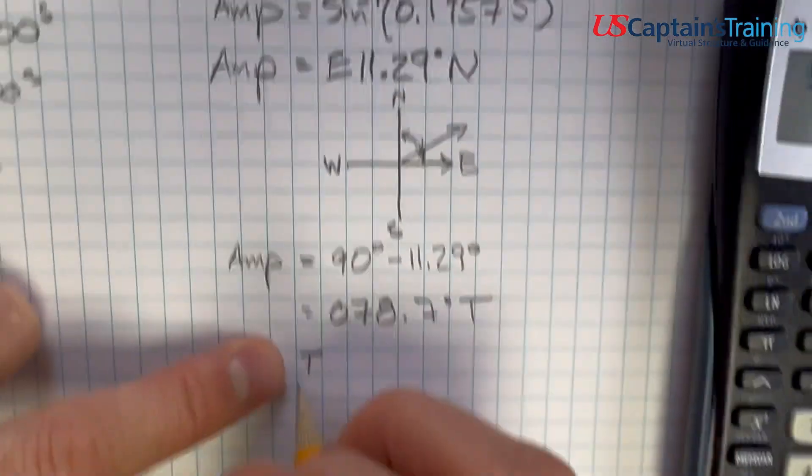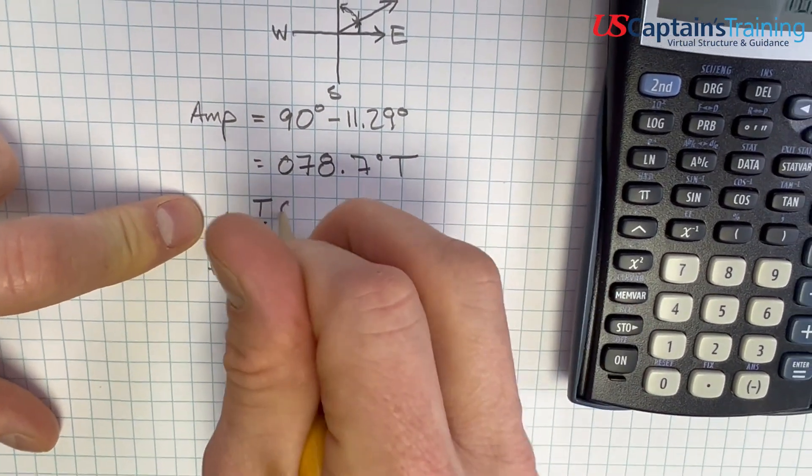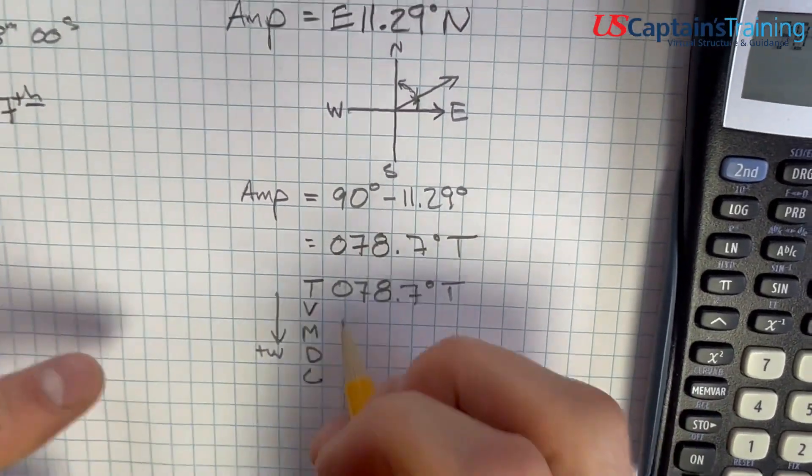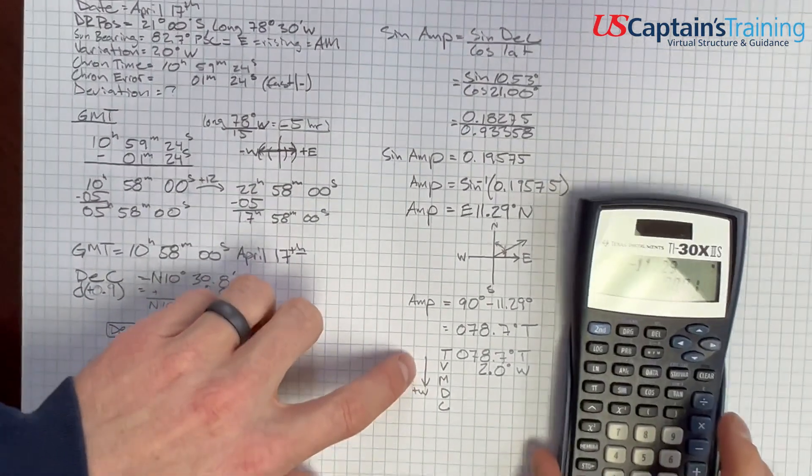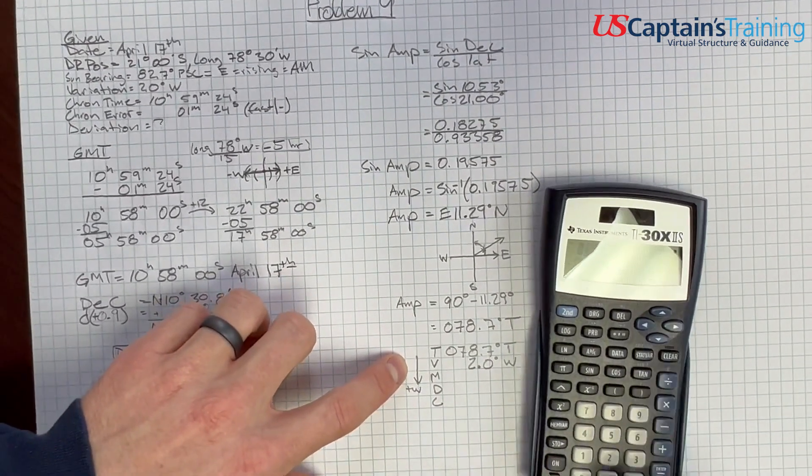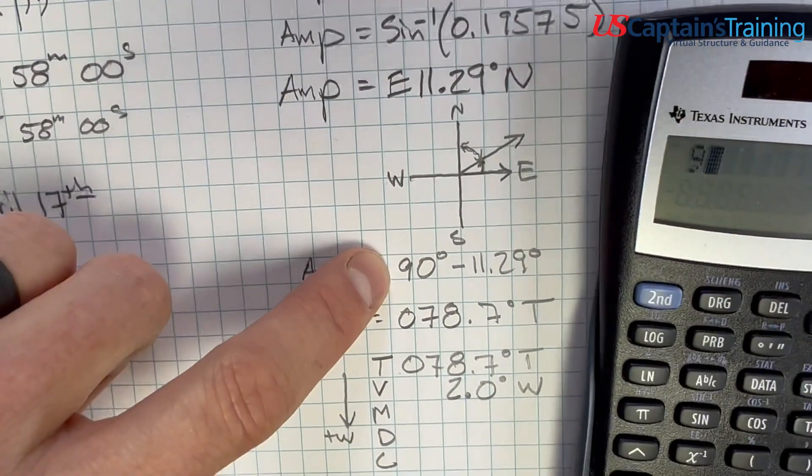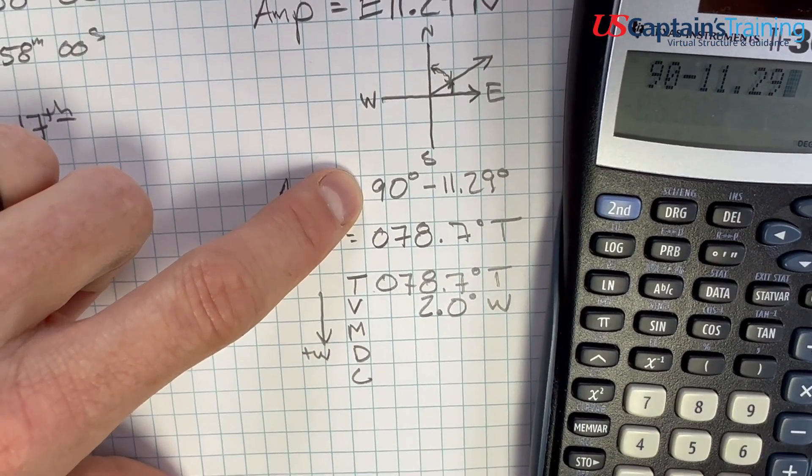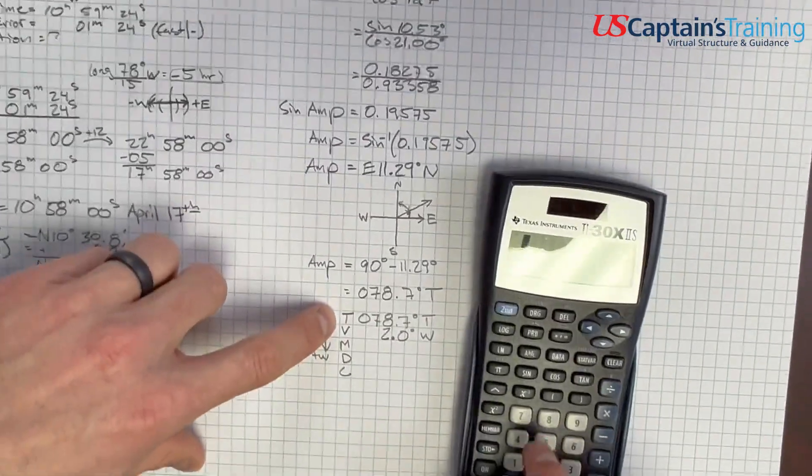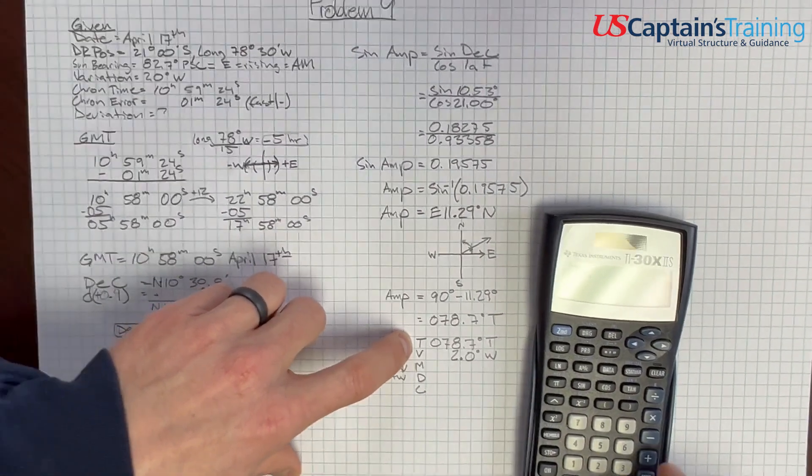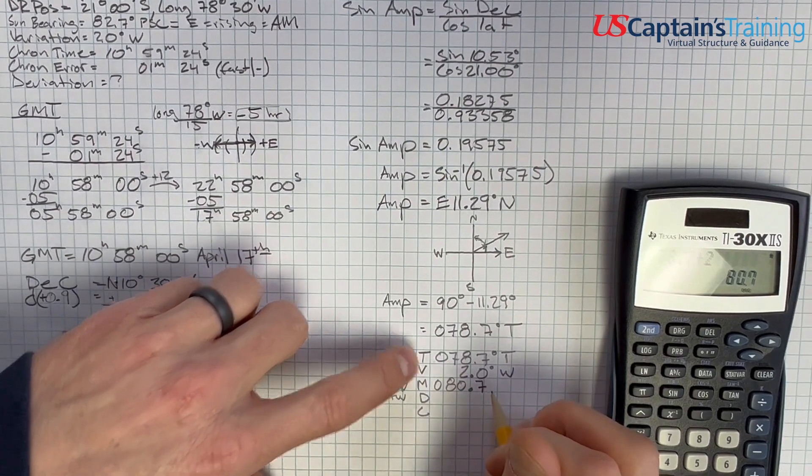T-V-M-D-C. So we're going down. We add west. So this is 78.7 degrees true. Variation was given in the problem is 2 degrees west. 2.0 degrees west. And so we add that. I've got to make sure that, one second. I'm going to do this really quick. 90 minus 11.29. 78.7. Good. Again, these numbers, you go through enough numbers, you're going to have some hiccups. So 78.7 plus 2 equals 80.7. 80.7. It's magnetic.